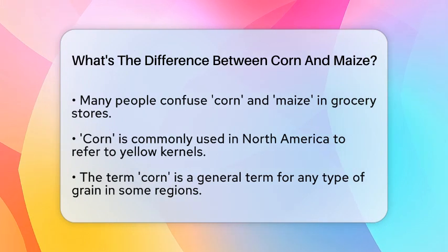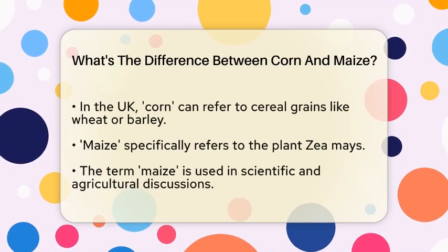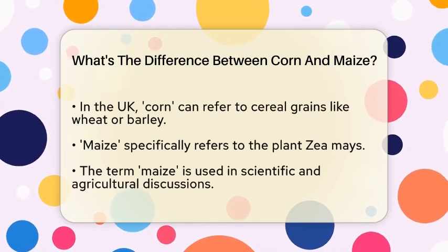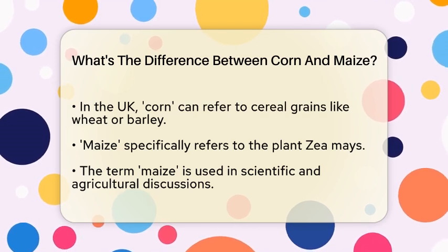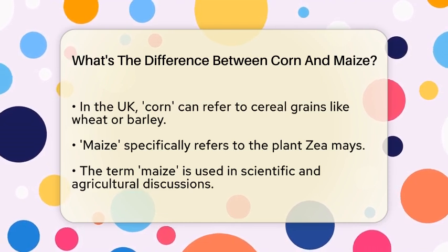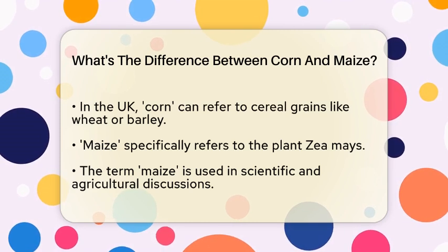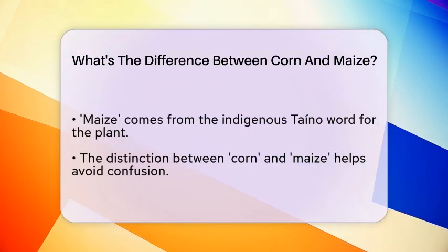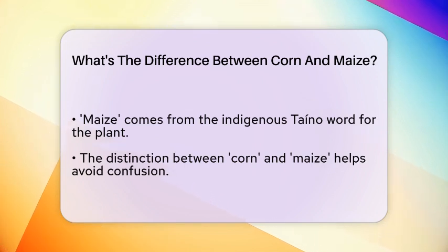To start, the word corn is primarily used in North America to refer to the yellow kernels that we often see in various food products. However, corn is actually a general term that can refer to any type of grain. In other parts of the world, particularly in the United Kingdom, corn can mean any cereal grain, such as wheat or barley.